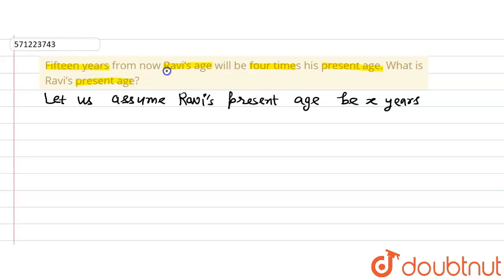The condition is 15 years from now, so it is talking about 15 years afterwards. So 15 years from now means Ravi's present age plus 15, or x plus 15. 15 years from now, Ravi's age will be 4 times his present age. So the age will be equal to 4 times Ravi's present age, which is x years.